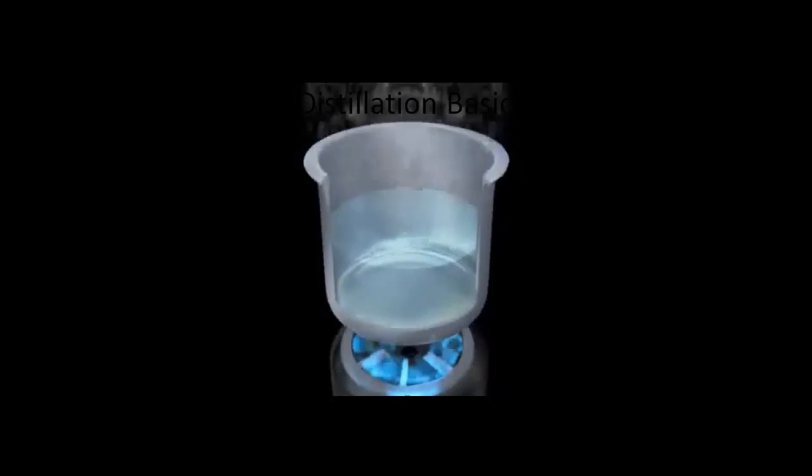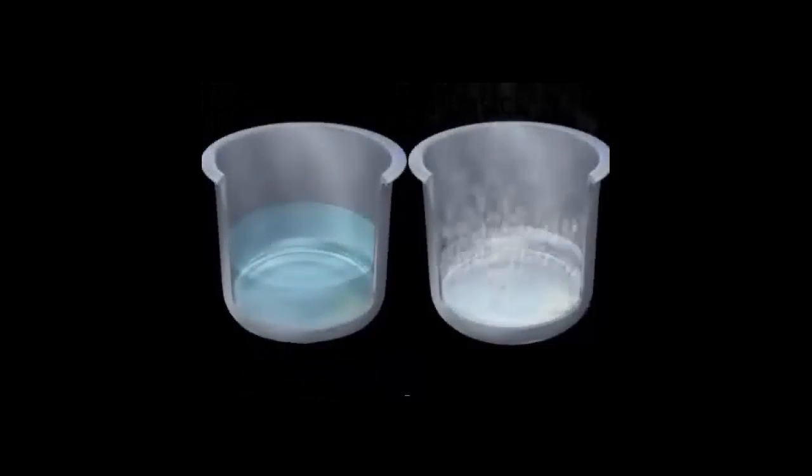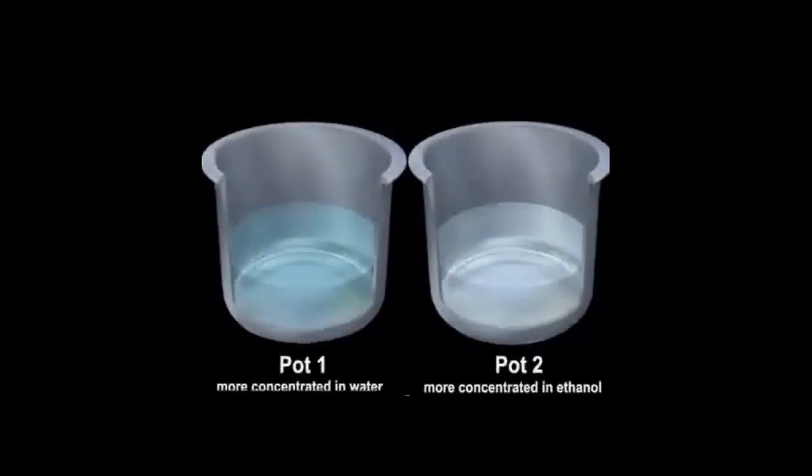Likewise, the remaining liquid in the pot will become more concentrated in water. If we collect the vapor from the pot and cool it, it will condense back to a liquid. We end up with two liquid mixtures, one stronger in ethanol and one weaker in ethanol.